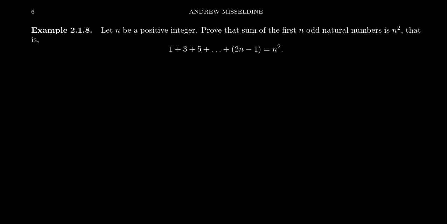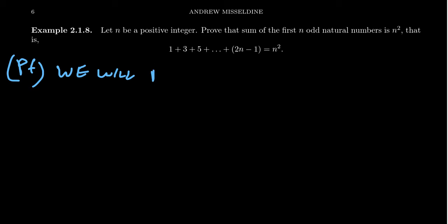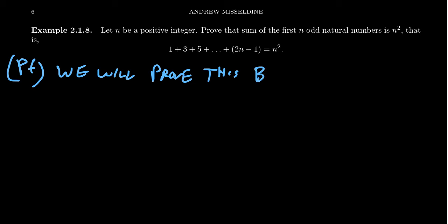If you're ever asked to prove something by induction, you can try to prove it using the smallest counterexample. As an example, let n be a positive number. Let's prove that the sum of the first n odd integers is equal to n squared — that is, 1 plus 3 plus 5 all the way up to 2n minus 1 equals n squared. The sum of odd numbers adds up to be a perfect square. We'll prove this by smallest counterexample.